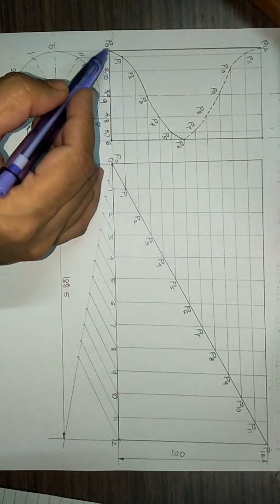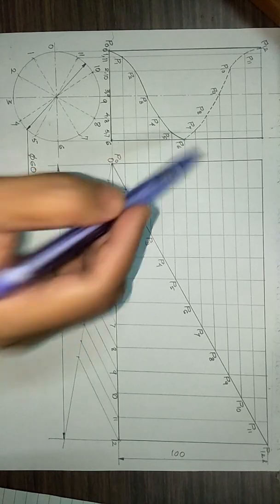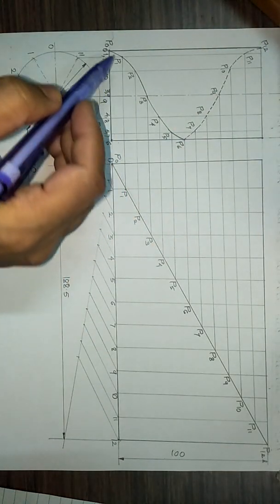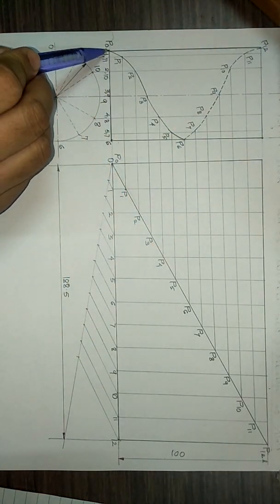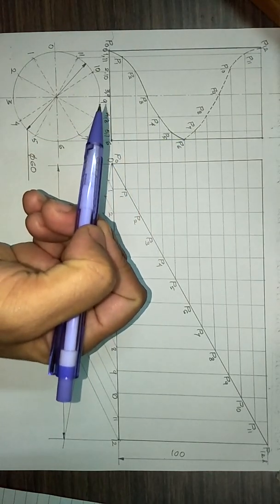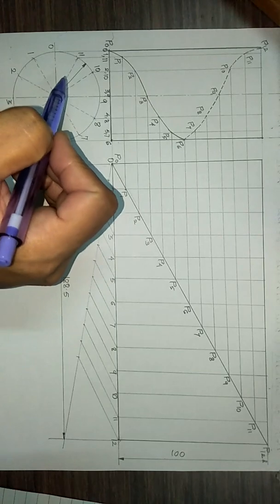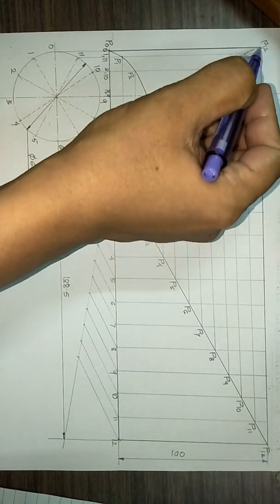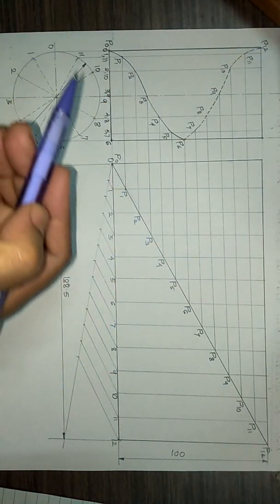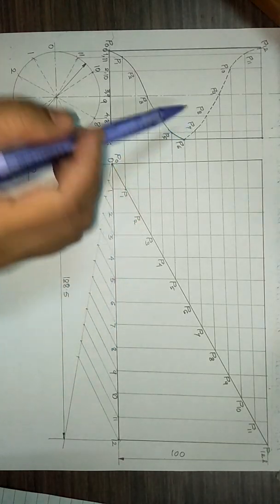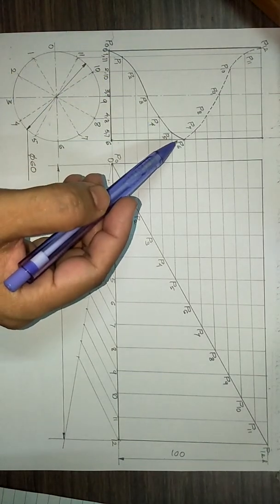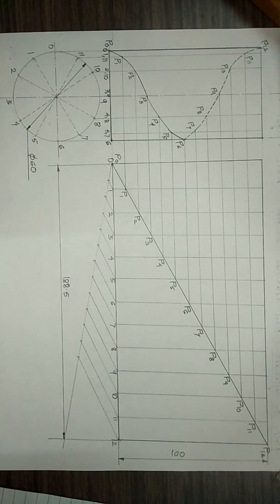We have joined all these points with the French curve and a smooth curve is formed. The part from p0 to p6 is on the front side of the cylinder, shown with a continuous line. The helix from p6 to p12 is on the back side which is not visible, shown as a dotted curve. In this way, we get the helix on the cylinder for one revolution. Thank you.